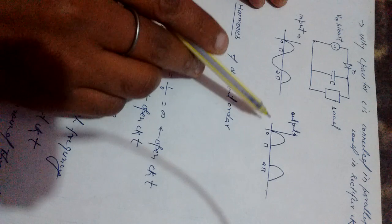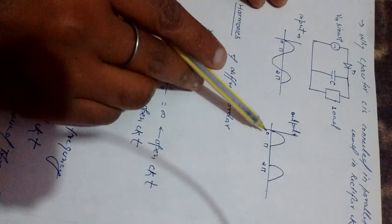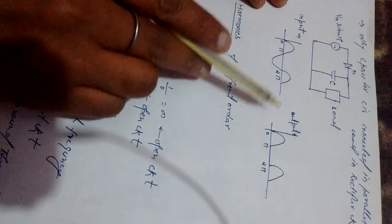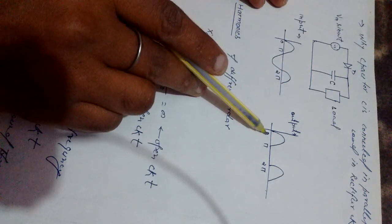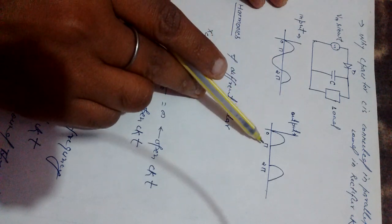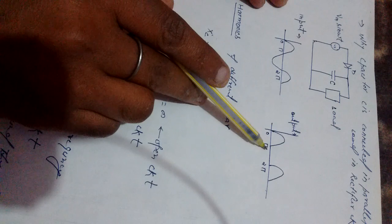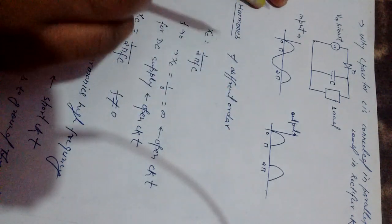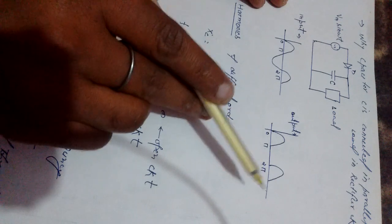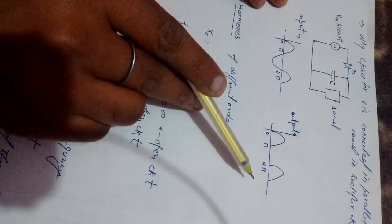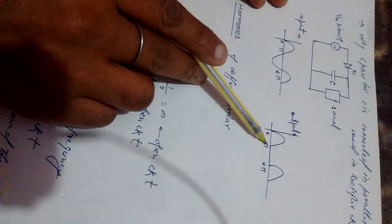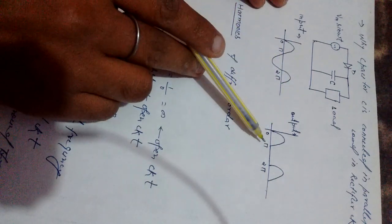So in forward bias, when the diode works as a short circuit from 0 to π, the output supply will be this much. And from π to 2π when the diode will not conduct and works as an open circuit, then output will be zero. Again for the next half cycle it will conduct, and the other half cycle it will turn off. The output will be like that.